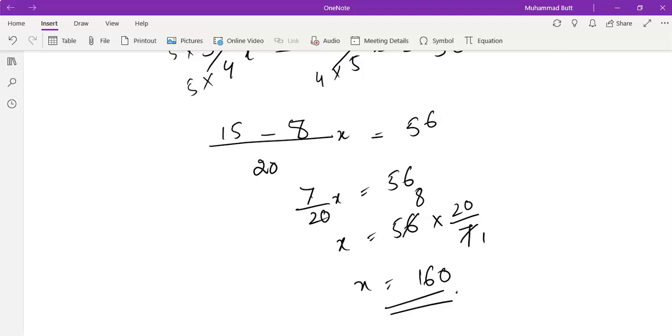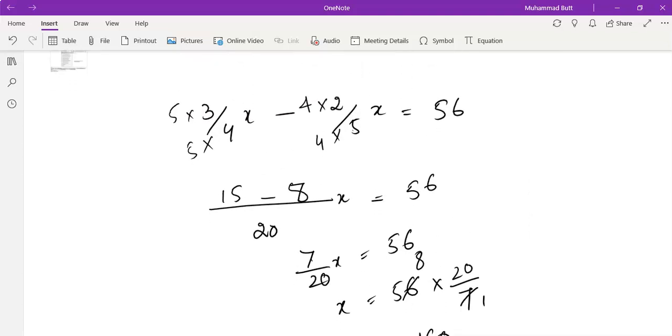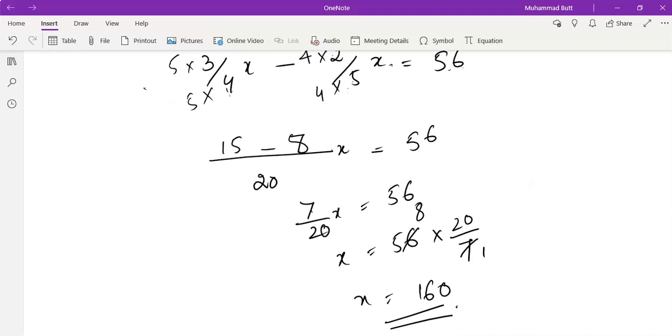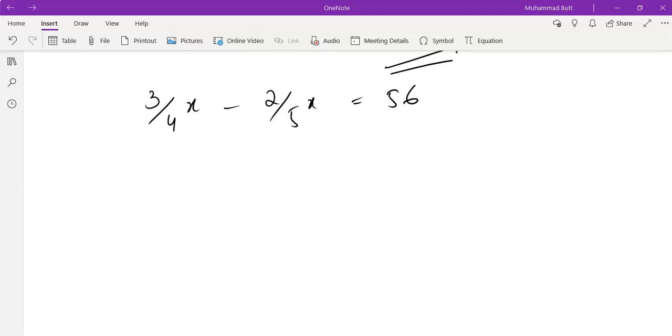There are so many other ways. You can also find out the LCM of 5 and 4, and you can multiply both sides by 20. 3 by 4 can be multiplied by 20. 2 by 5 could also be multiplied by 20. And 56 will also be multiplied by 20 in that case.